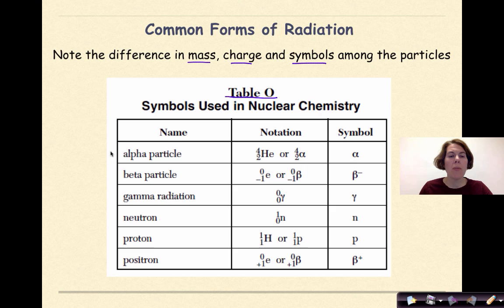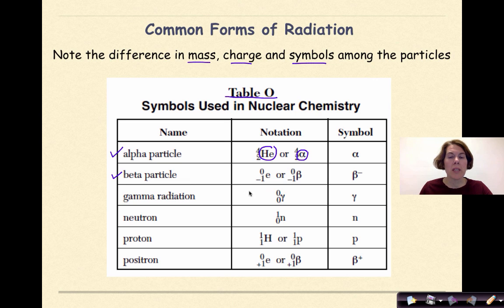An alpha particle can be represented as either He (helium) or an alpha symbol. A beta particle is basically an electron, so we'll see it represented as an E or the beta symbol. Gamma radiation is represented by the gamma symbol.